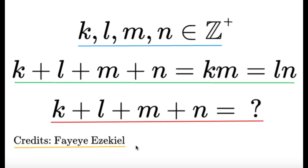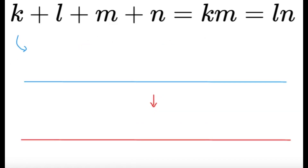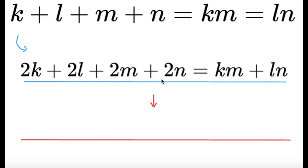We're technically given with more than one equation. We have K plus L plus M plus N equal to KM, and K plus L plus M plus N equal to LN, and KM equal to LN — so technically we're given three equations. Now, I'm going to double K plus L plus M plus N, giving 2K plus 2L plus 2M plus 2N, and set this equal to KM plus LN. Since K plus L plus M plus N equals both KM and LN at the same time, this equation must hold true.